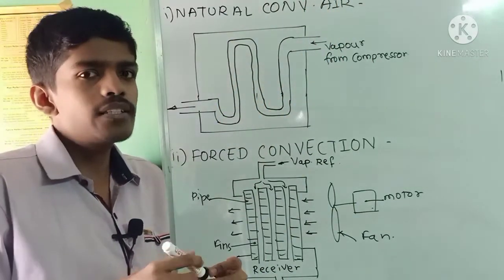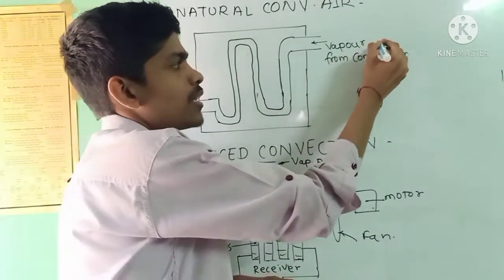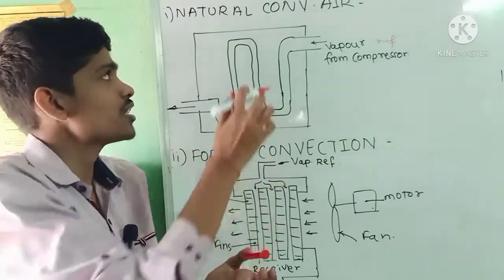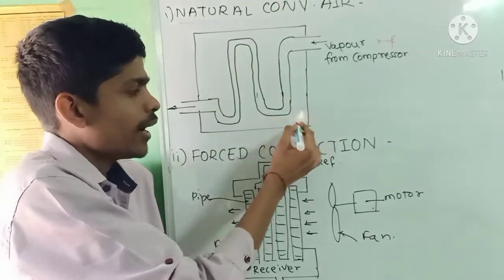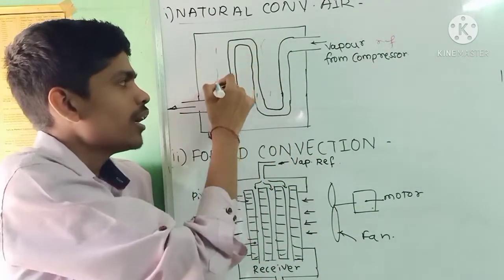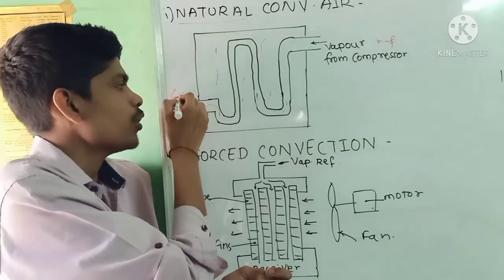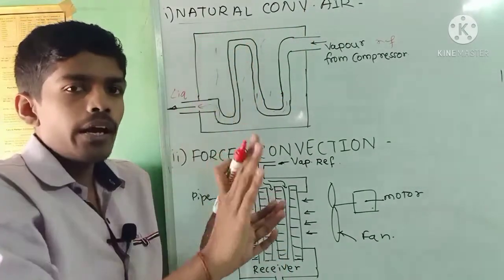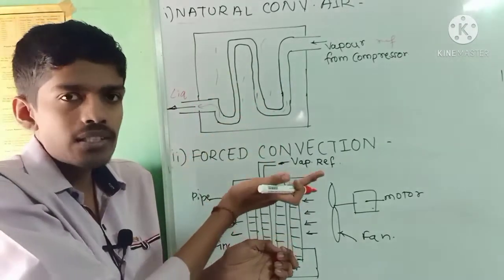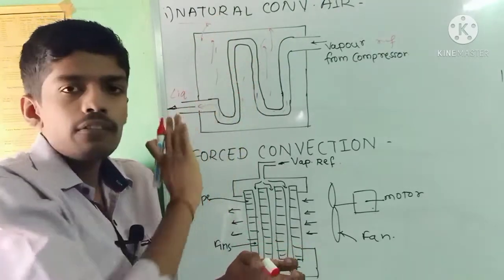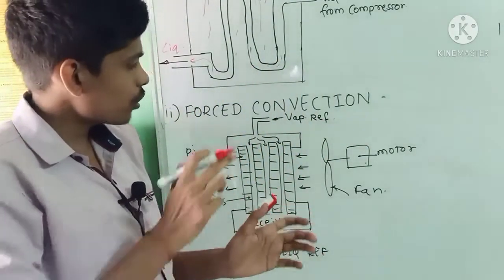In the natural convection air-cooled condenser, cooling and condensation take place naturally. The vapor refrigerant from the compressor flows through the pipe, and natural air flows over it. That air absorbs the heat from the vapor refrigerant — it becomes warm and, due to low density, moves upward. The vapor refrigerant at last gets converted into liquid refrigerant.